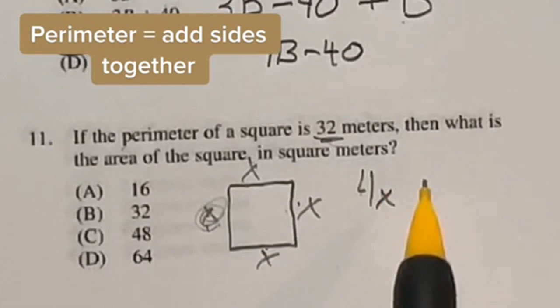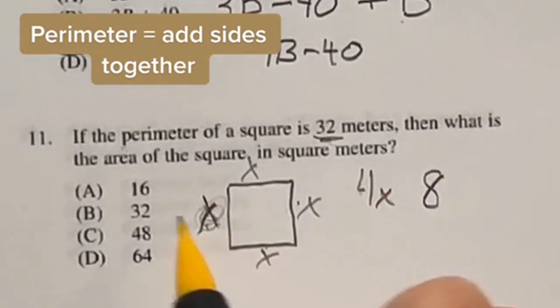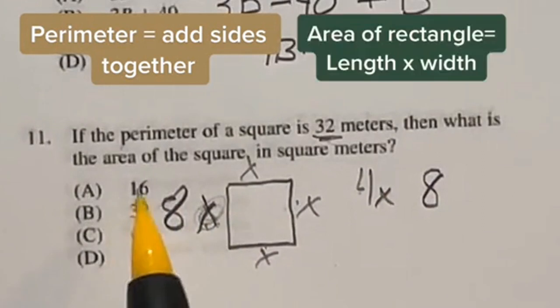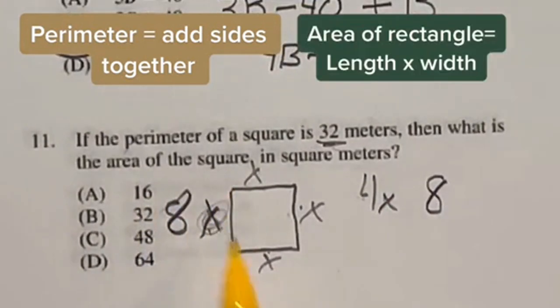So 32 divided by four is going to give me eight. That means one of these side lengths is eight. Now, the area of a square is just length times width. So in this case, that would be eight times eight, which is answer D, 64.